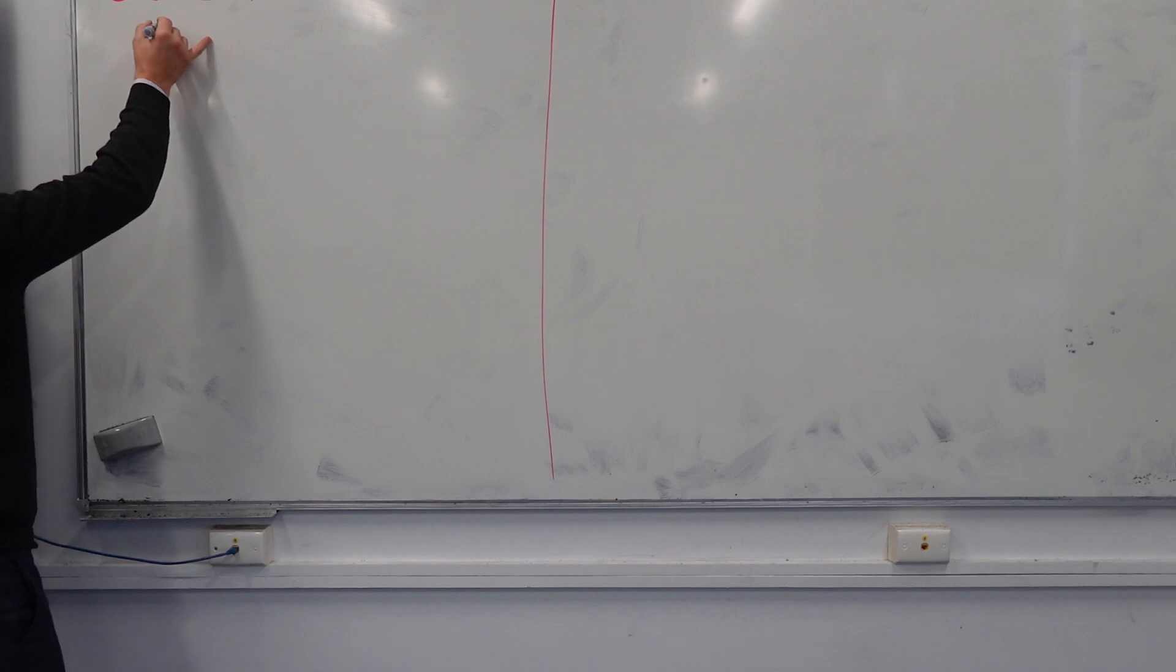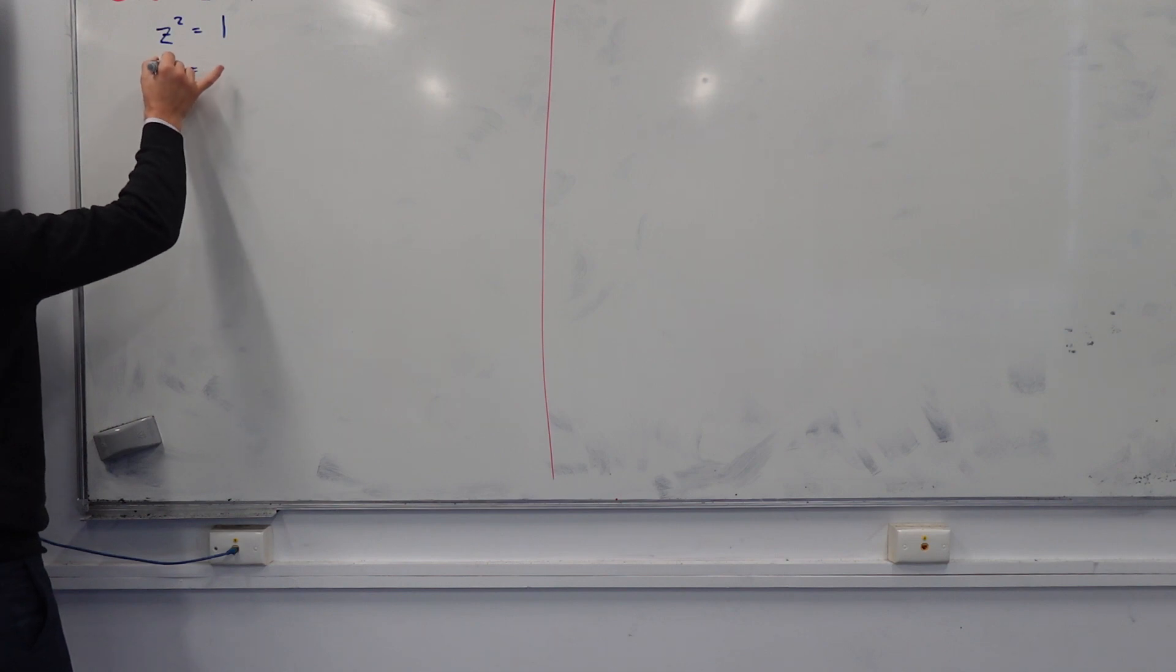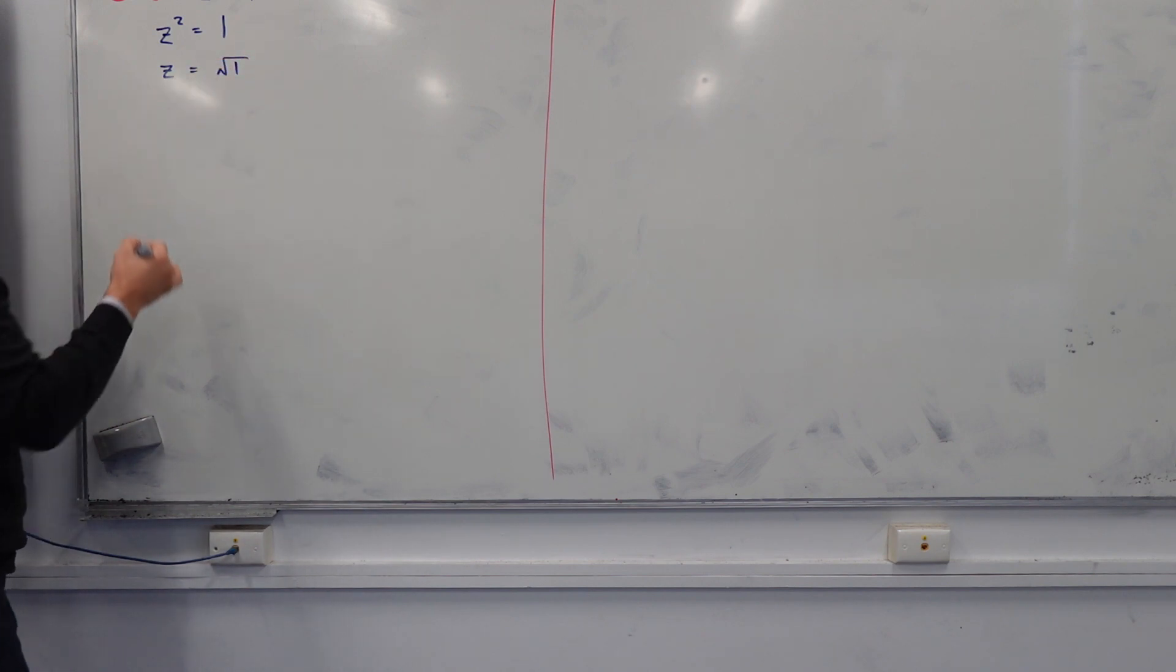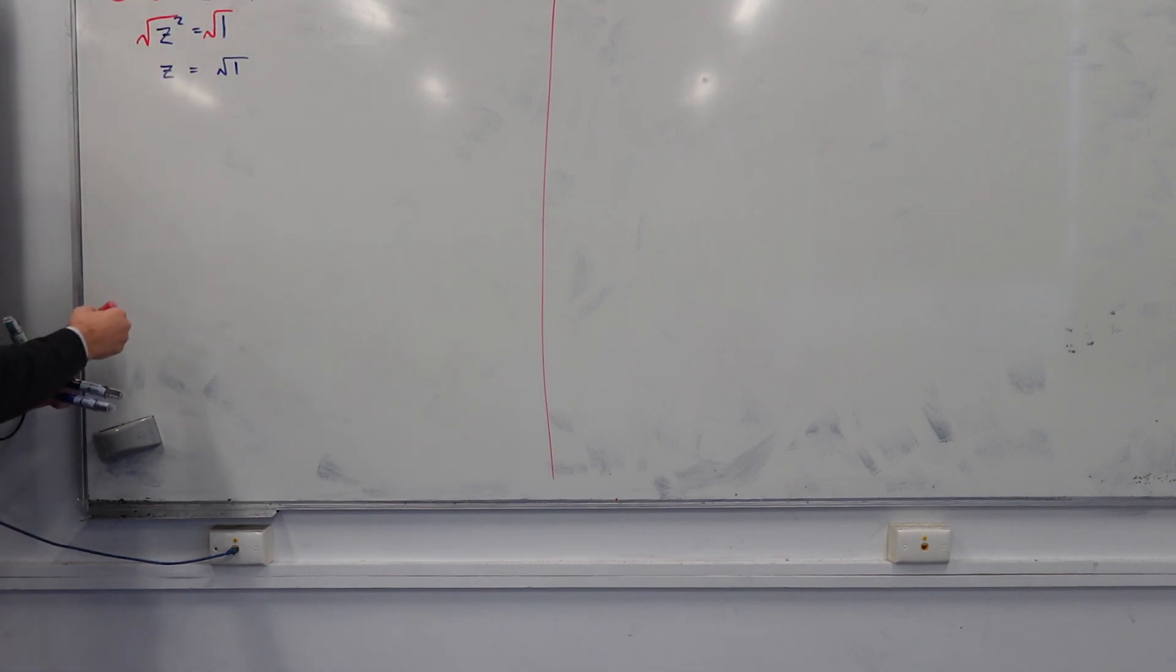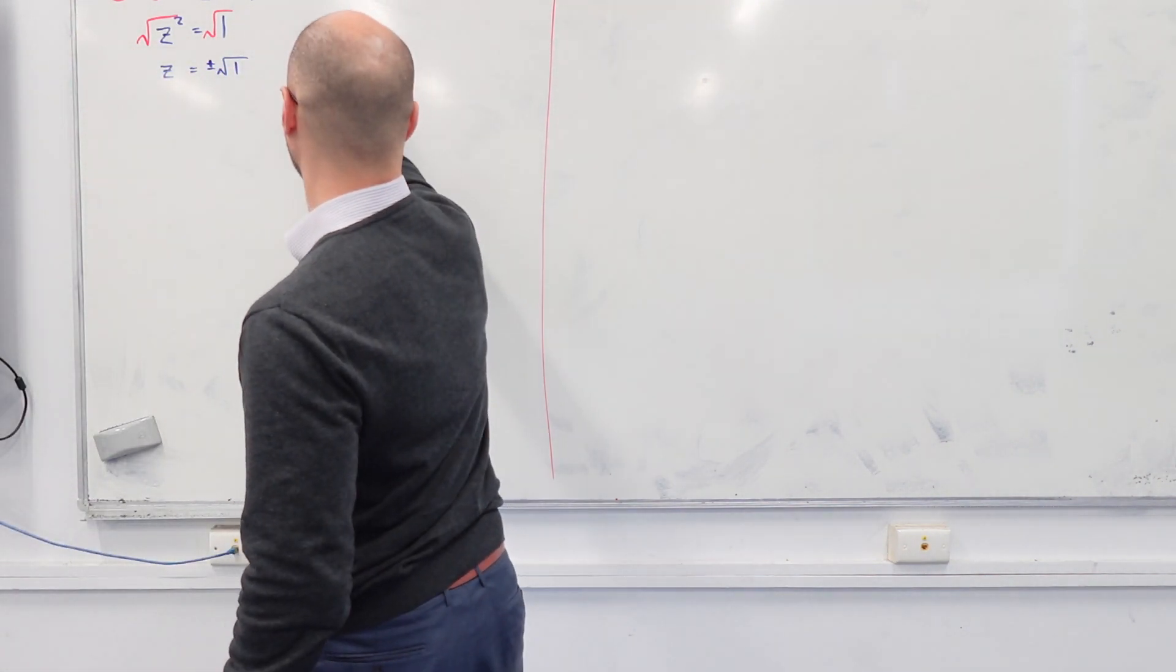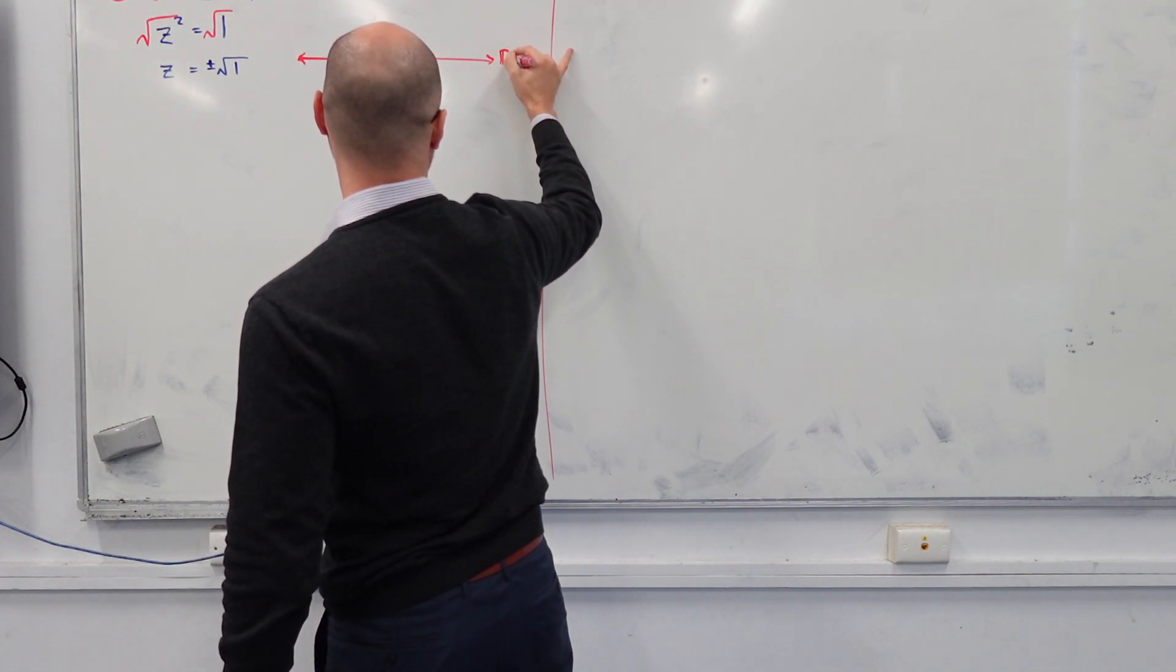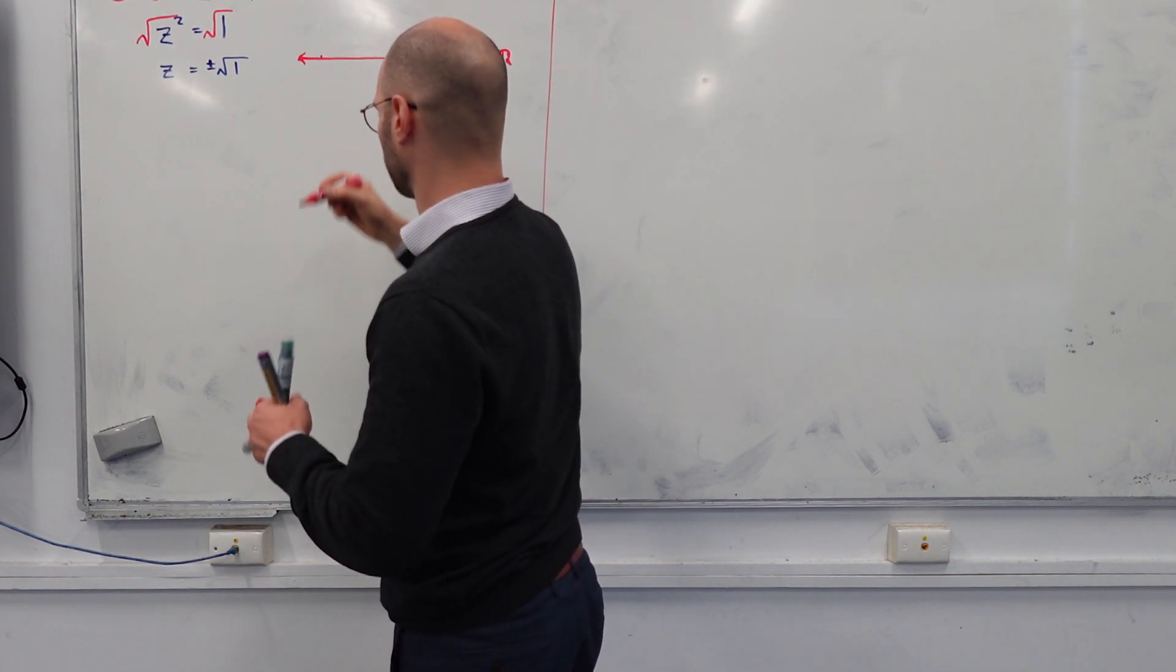Because if we said z squared equals 1, the way we solve this is we just square root both sides. So it becomes z equals square root of 1. And we know that if we square root both sides, what do we automatically put in front? Plus or minus. So the answers are plus or minus 1. Now looking at this along the number line,